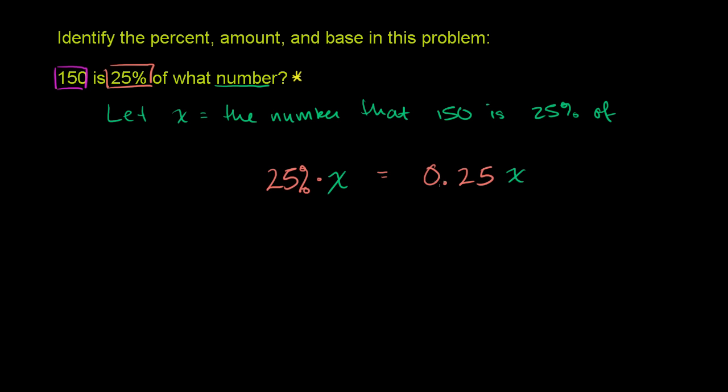These two statements are identical. So if you start with that number, you take 25% of it, or you multiply it by 0.25, that is going to be equal to 150. 150 is 25% of this number. And then you can solve for x.